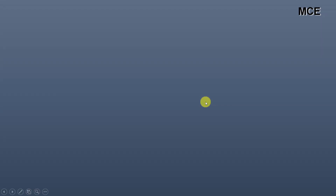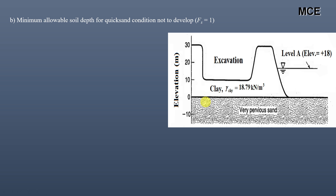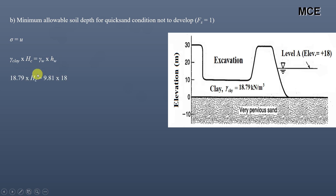For Part B, we have to find the minimum allowable soil depth for the quicksand condition not to develop, taking factor of safety equal to 1 — the clay height should be just at the threshold where quicksand does not develop. Again, total stress should equal pore water pressure, so unit weight of clay multiplied by height of clay should equal unit weight of water multiplied by head of water. The unit weight of clay here is 18.79 kN/m³.